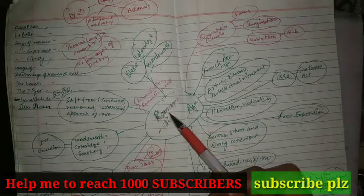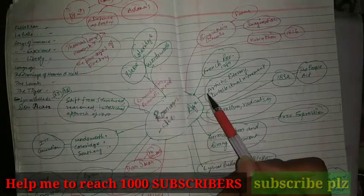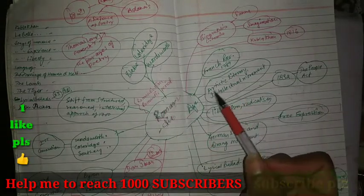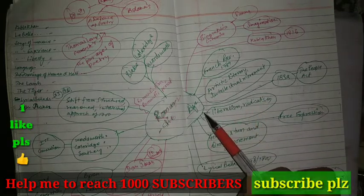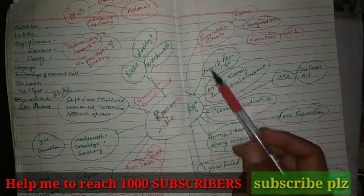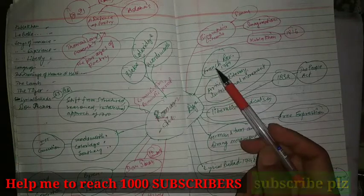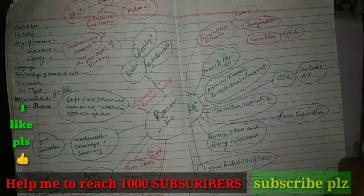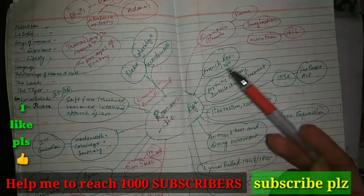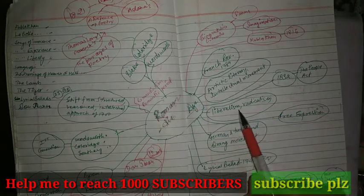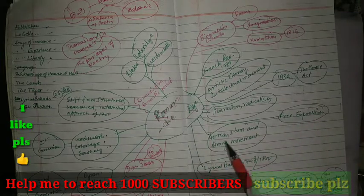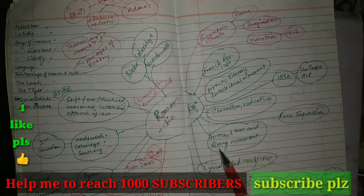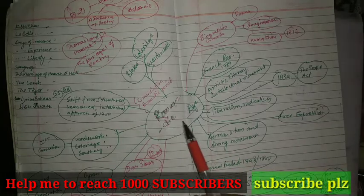We can talk about romanticism in this way. This was an artistic and literary intellectual movement. The French Revolution had put a lot of impact on romanticism, and they had some ideas from this. Liberalism and radicalism was part of this. German Sturm und Drang movement also affected this thing.